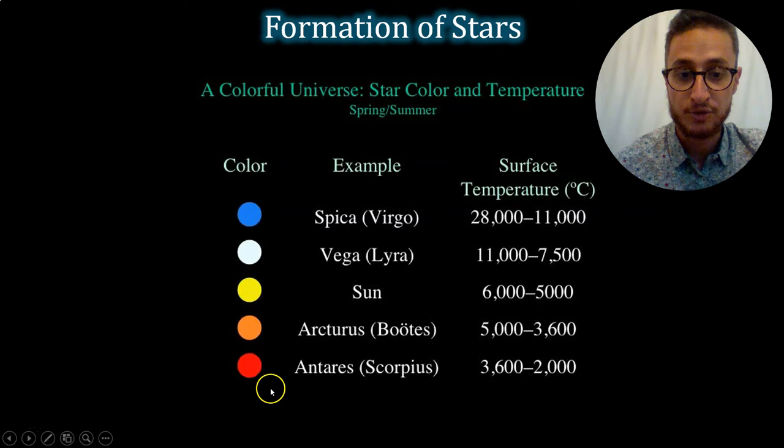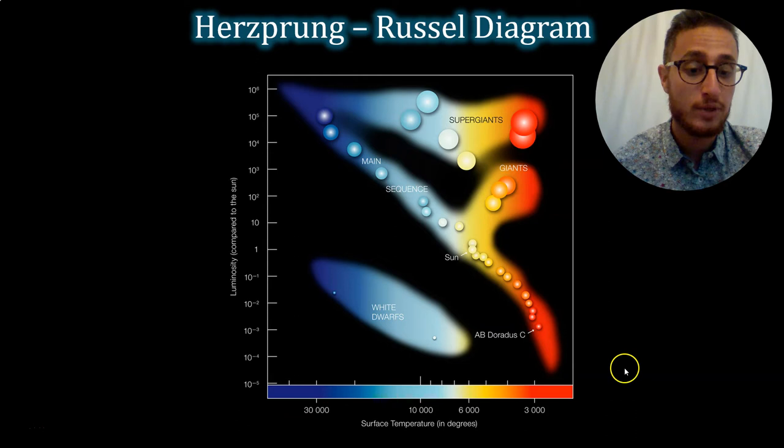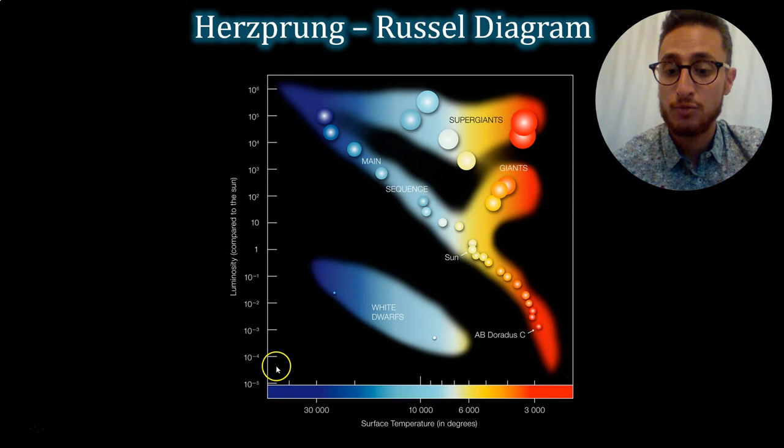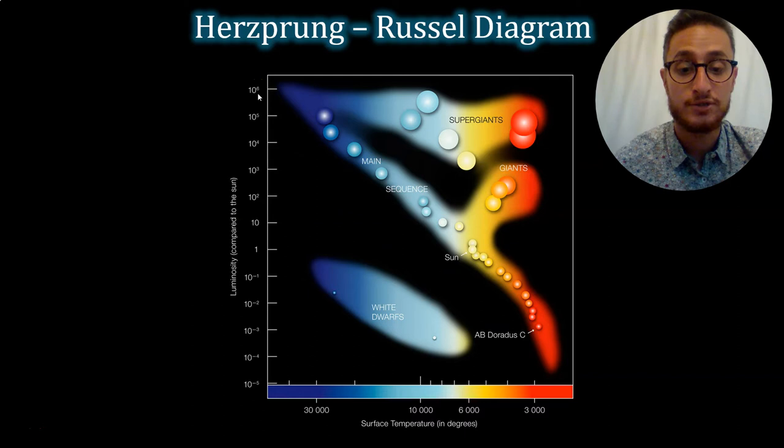And so this is called a Hertzsprung-Russell diagram. And what it's trying to do is to try to group the stars according to their characteristics. So along the x-axis, we have the temperature of the stars. Here you have the cooler ones. Here you have the hotter ones. And then here we're trying to get an estimate of how large these stars are by looking at their total light output. A little bit of light output down here, a lot of light output over here. We call that factor luminosity.